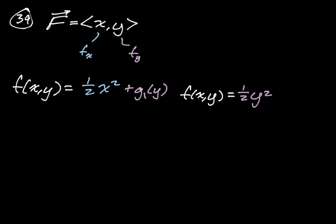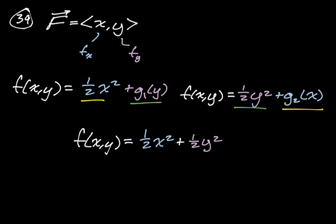If there had been a function of only x involved, its derivative would have been zero, so we introduce another function of integration g₂(x). Comparing the two results: we have ½x² and an arbitrary function of x, so that arbitrary function can just be ½x². We also have an arbitrary function of y and ½y². Combining those, the potential function is ½x² + ½y².